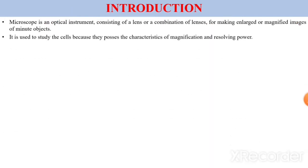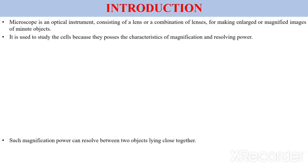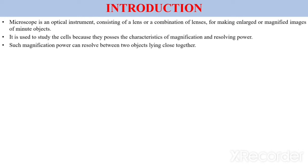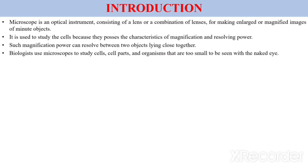The microscope is used to study cells because they possess the characteristics of magnification and resolving power. Such magnification power can resolve between two objects lying close together. Biologists use microscopes to study cell parts and organisms that are too small to be seen with the naked eye.